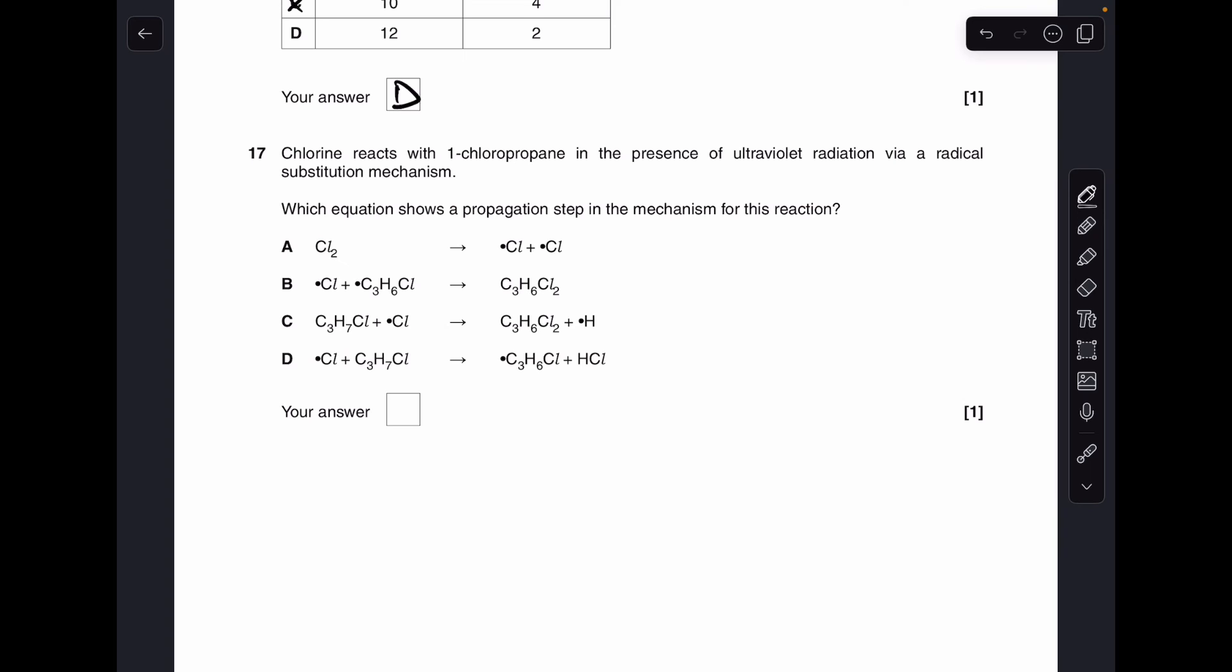Number 17. Which equation shows a propagation step in the mechanism? So A is wrong because that's an initiation step. B is wrong. That's a termination step. So C and D both look like propagation steps. But C is wrong because of that H radical. So D was the answer.